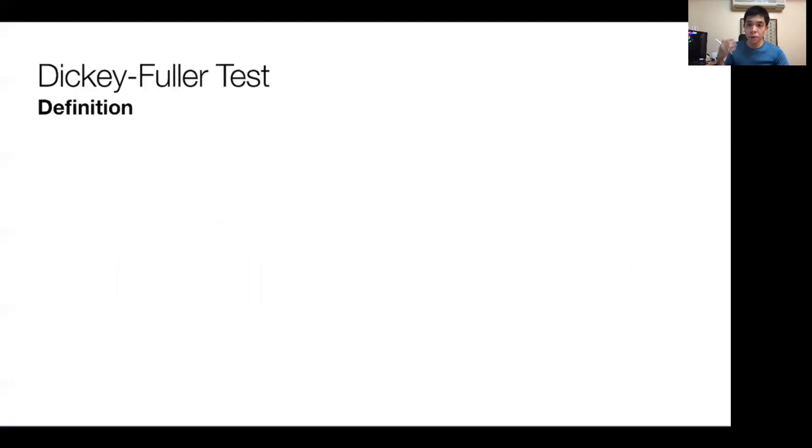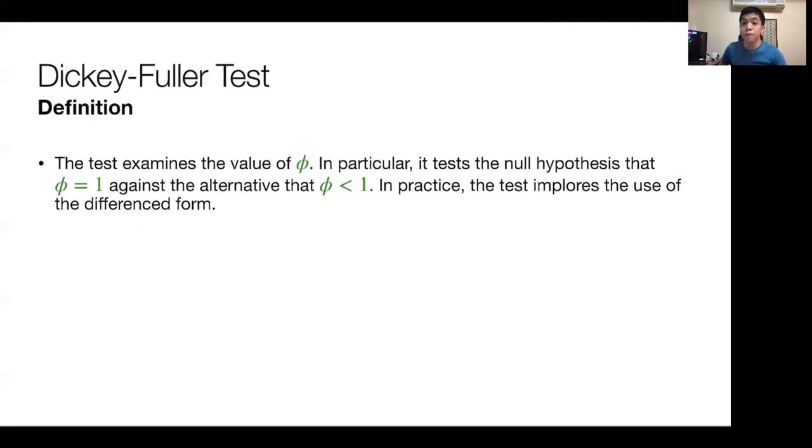There are many tests to test if a series could be non-stationary, and we will discuss a couple of tests. Three are unit root tests, while the last one is a non-stationarity test. The Dickey-Fuller test is the first test we'll discuss, which detects the presence of unit roots. The test essentially examines the value of phi.